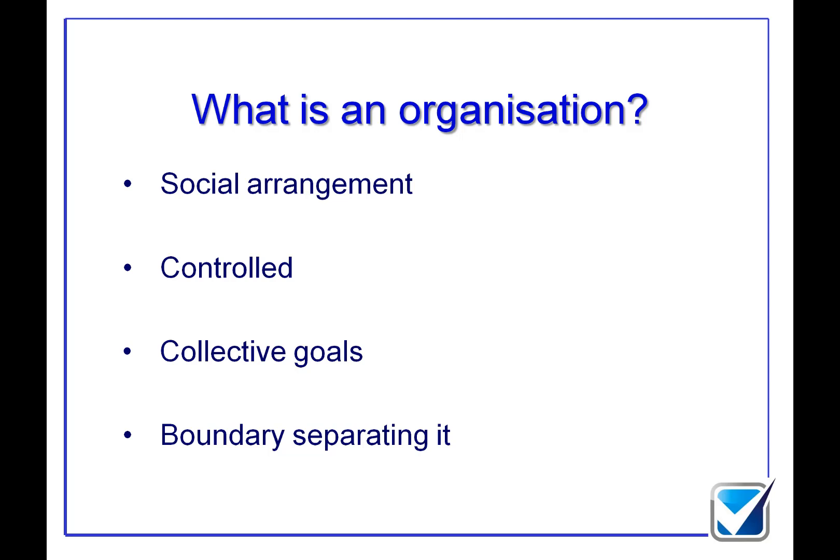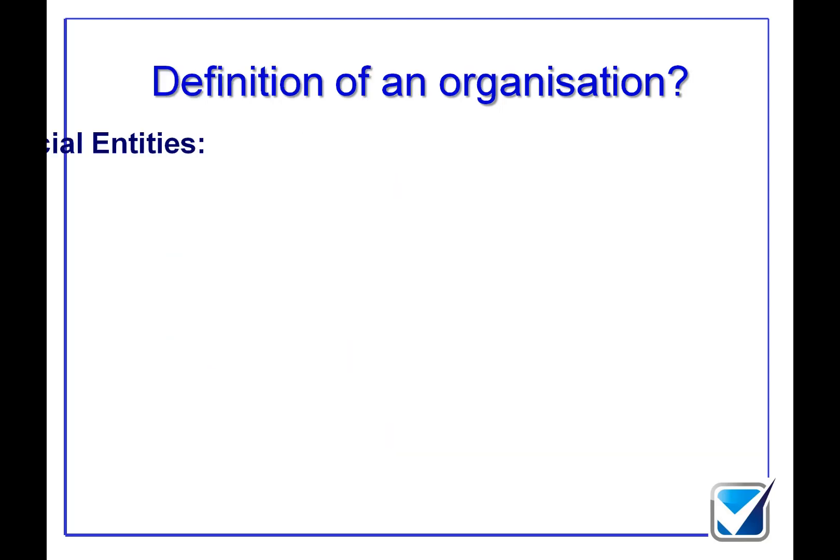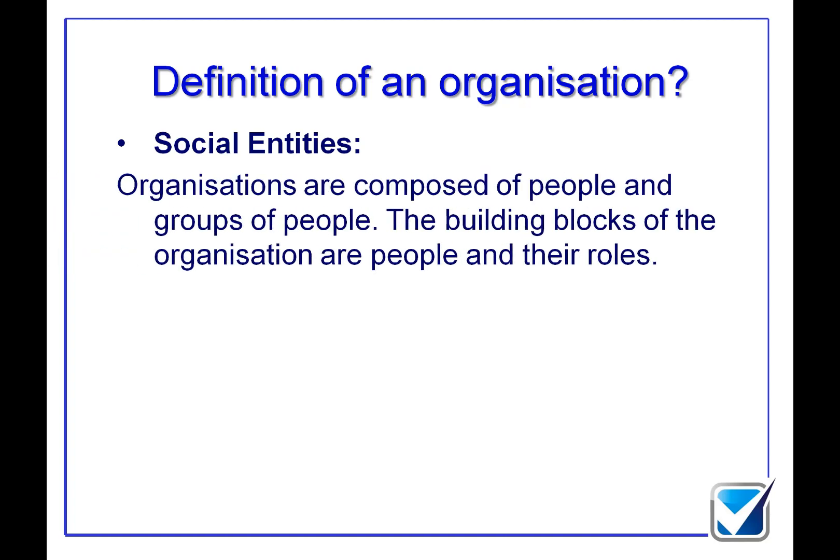Now that's all very wishy-washy, so we're going to look at these things in a little bit more detail. We're going to take each of these four different component parts and look at them more carefully. The social arrangement means that our entity, our organisation, has got a social reason for being.